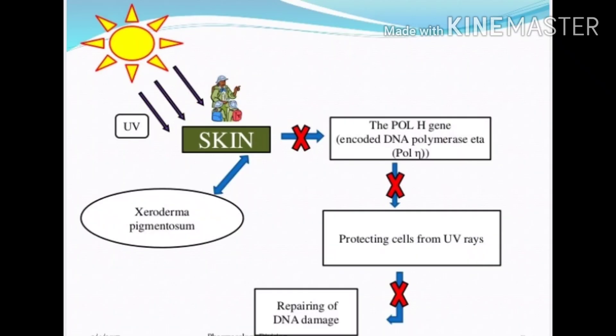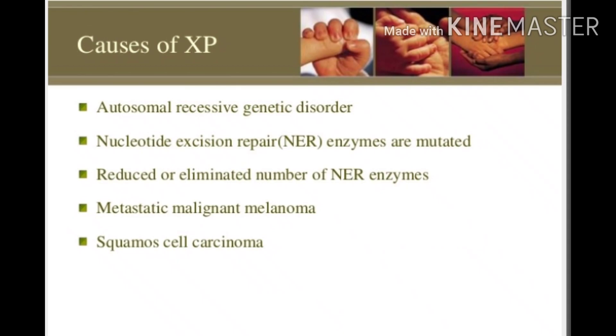When UV light falls on skin, the pol H gene gets activated and normally produces DNA Polymerase Eta enzyme. This DNA Polymerase Eta enzyme protects cells from UV rays by inducing proper DNA damage repair. When the pol H gene is not activated, it causes the genetic disorder Xeroderma Pigmentosum.